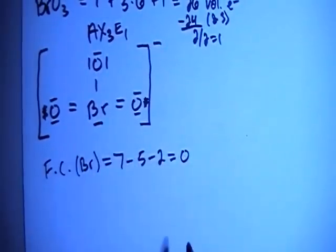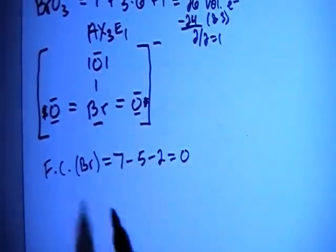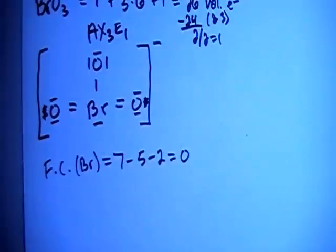And you see before, if we had the single bonds, it would have been plus 2, and you don't want to have anything like plus 2 as a formal charge.